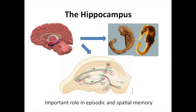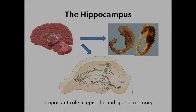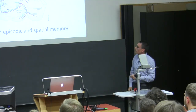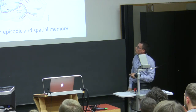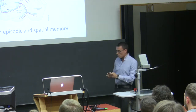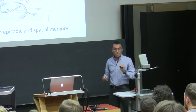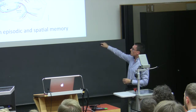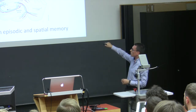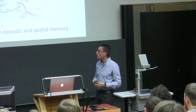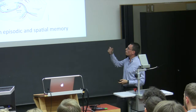If you dissect the hippocampus in thin slices of 200–300 microns and look at them under a microscope, you will recognize three main regions: the dentate gyrus, composed of small cells called granule cells; CA3; and CA1. Both CA3 and CA1 are composed of very large cells called pyramidal cells, and you will see later why they are so important for this talk.